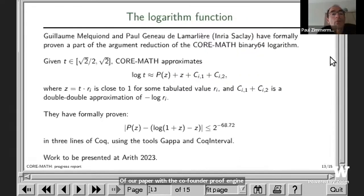Another focus is on the logarithm function, still in double precision. Some colleagues at Inria Saclay formally proven a part of the argument reduction that we use in CORE-MATH. We first reduce the argument to between square root of two over two and square root of two, and then we approximate the logarithm of t using a polynomial plus some table values. They formally proven that the polynomial approximation is close to z plus log of one plus z with some values that were given in our code. Their work will be presented also at the Arith conference.